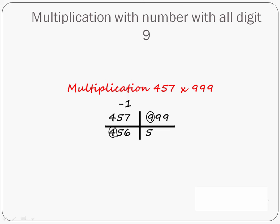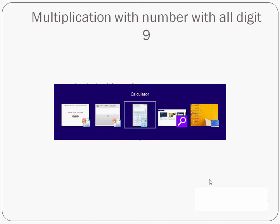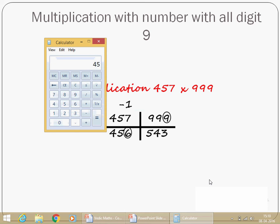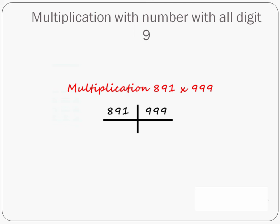The second step is to subtract each digit of your result from 9. Subtract 4 from 9: gives 5. Subtract 5 from 9: gives 4. Subtract 6 from 9: gives 3. So your answer is 456 543. Let us verify: 457 × 999. You can see you get the same answer — 456, 543. Let us take one more example to make it clearer.